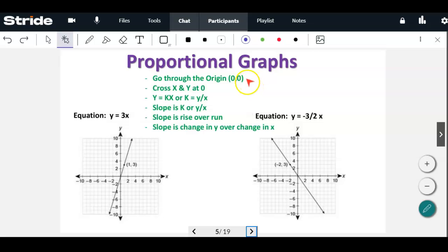Just a quick review. Proportional relationships go through the origin. Look at the equation, y equals 3x. There's no plus or minus anything, it's just 3x because it goes through zero, zero. And this one being a negative slope, it's y equals negative three halves. Here's the things for proportional graphs: goes to the origin, crosses x and y at zero, always in the form of y equals kx. Slope is the y over x or rise over run, or it's the change in y over change in x.